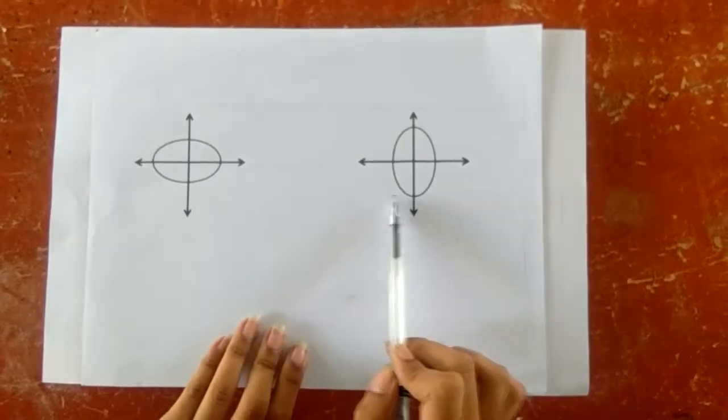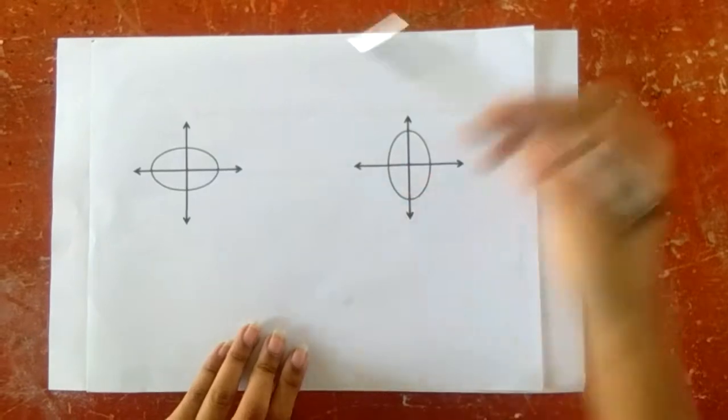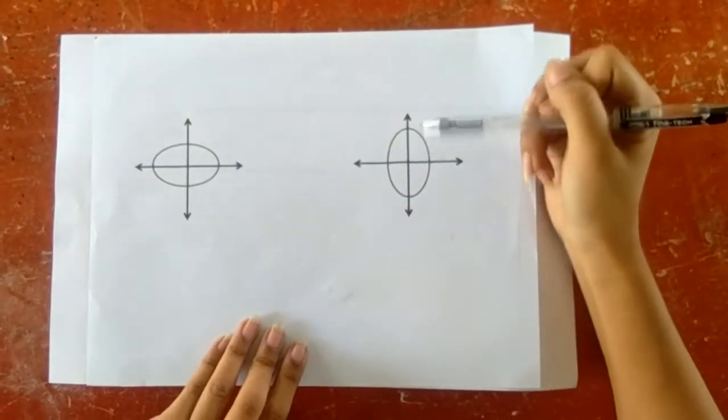Before we get started, let me clarify that what we are going to discuss right now is an ellipse that has a center located at the origin. Let us consider these graphs right here. There are two types of ellipse: one that lies along the horizontal axis and one that lies along the vertical axis.